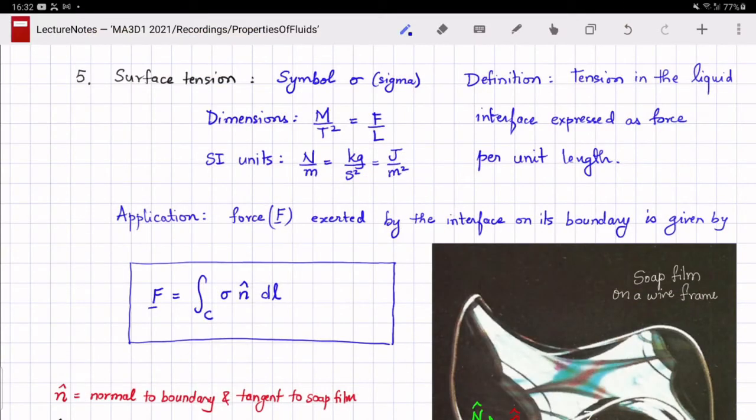In order to understand this behavior, let us consider how one expresses surface tension and the force exerted by the surface on its boundary. The definition of surface tension is the tension in the liquid interface expressed as force per unit length. It has dimensions of F over L which translates to M over T squared in the MLT system. It has SI units of newtons per meter which are equivalent to kg per second squared in the MKS system.